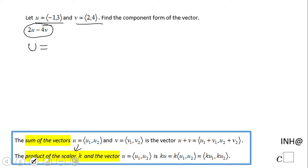We have the vector u, <-1, 3>. 2u will be 2 times this vector, 2 times <-1, 3>. Then you multiply: 2 times -1 is -2, 2 times 3 is 6. So this is 2u, which equals <-2, 6>.